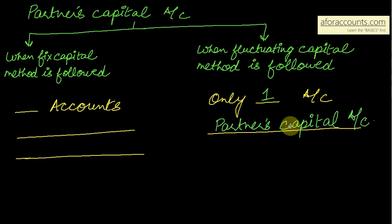For however many partners there are — say A, B, and C — you will make a partner's capital account for all of them.